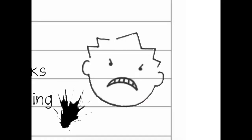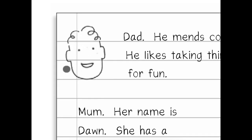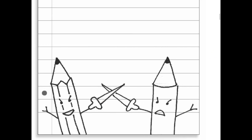My family: my big brother — he looks like this when he's chasing me. Scary. Little sis — always happy about everything, no one knows why. Dad mends computers and likes taking things apart for fun. Mum's name is Dawn; she has a gardening business called Dawn's Lawns. I asked her what she'd have done for a job if she hadn't been called Dawn — she gave me a funny look. I'm stopping now as my hand is aching, but Mrs Hall says we have to keep writing — it's a dying art. 'Good — let it die,' I said. And then she said, 'You are staying in at break, John Fisher.'